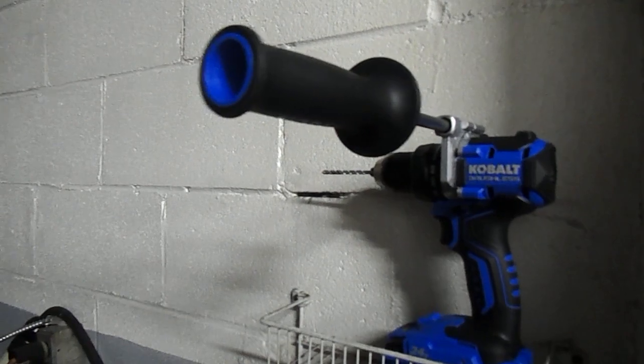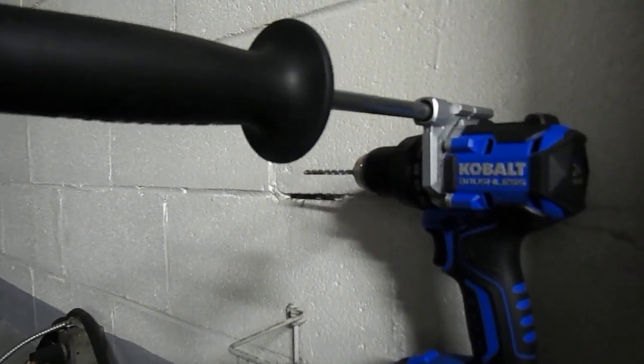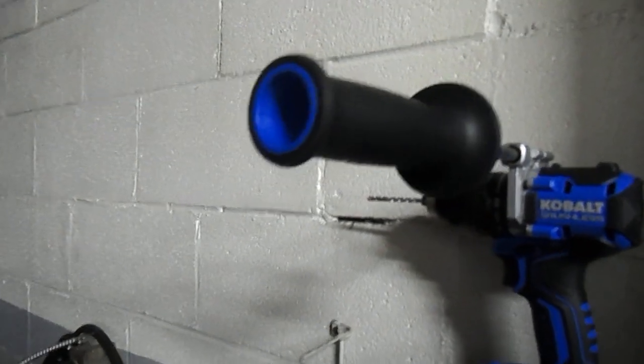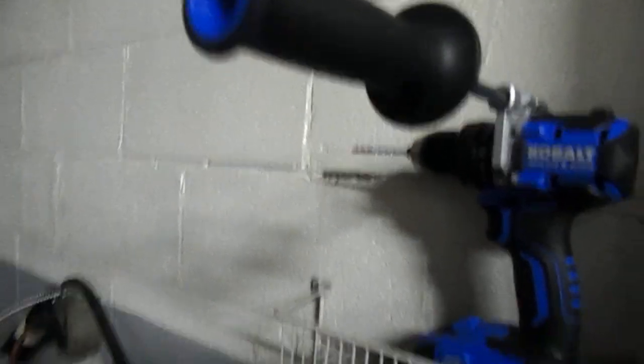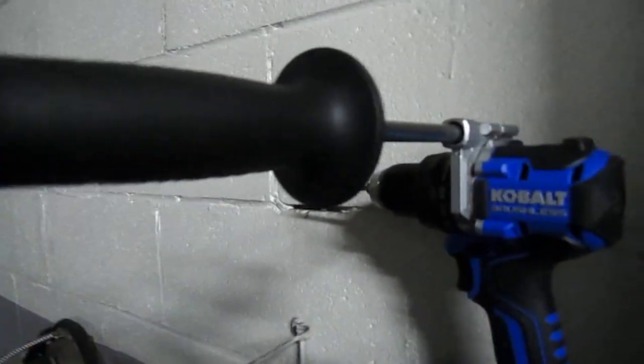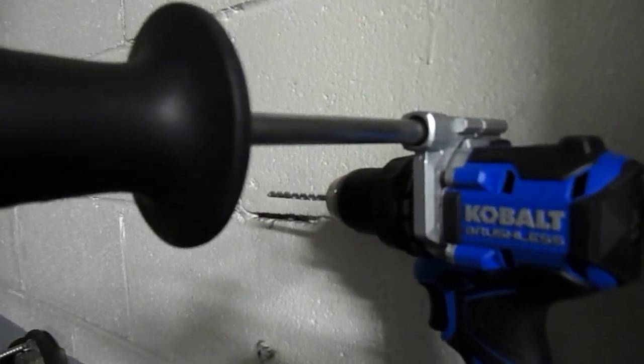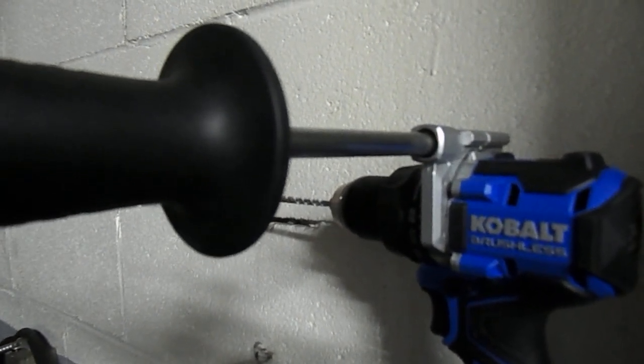As you guys can see, this handle goes along the drill itself. It's got the fastening screw, a really nice black and blue handle. It grips really nicely as you can see right here. It goes all the way through.